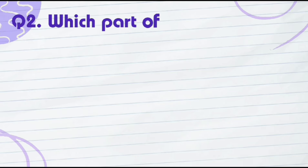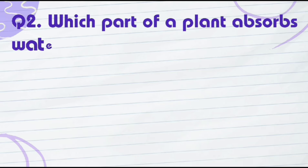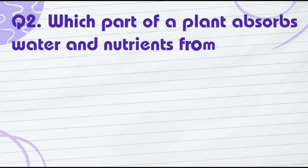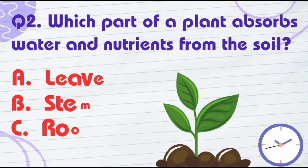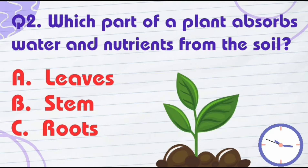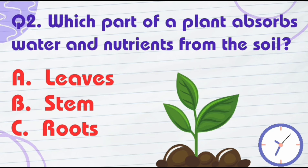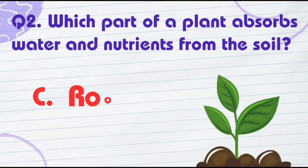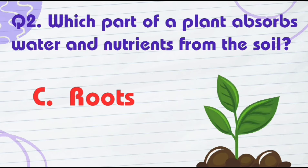Which part of a plant absorbs water and nutrients from the soil? The correct answer is option C: roots.